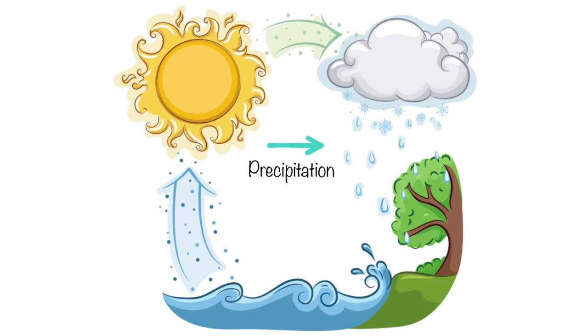Precipitation. When the droplets in the clouds get heavy enough, they fall back down to the ground as rain, snow, sleet, or hail.